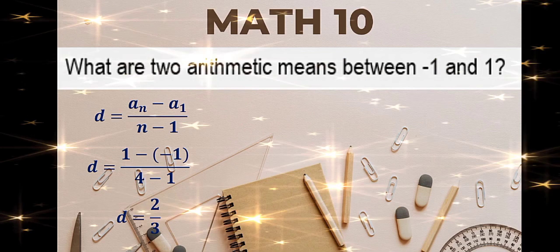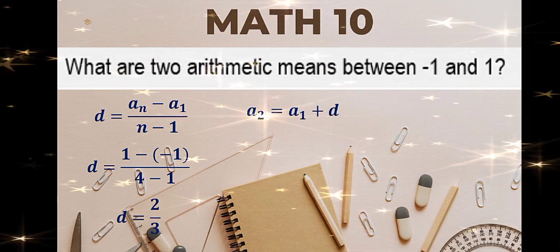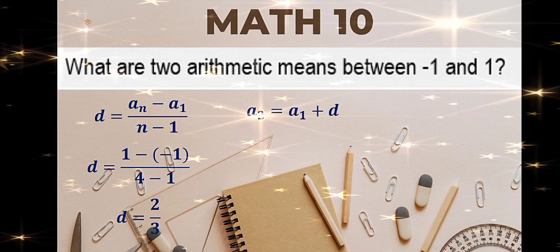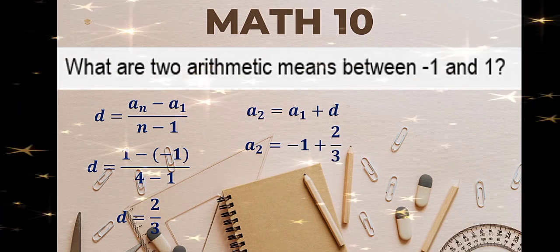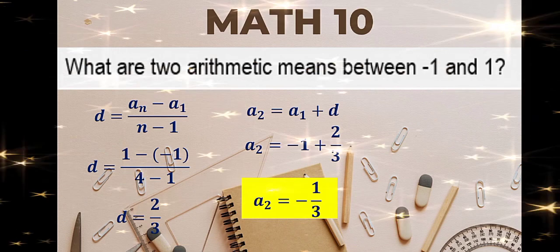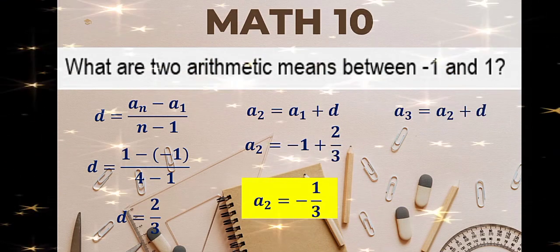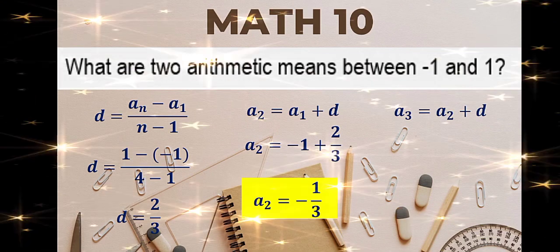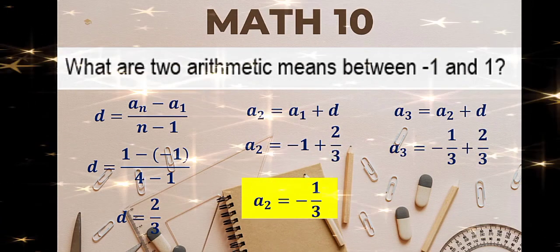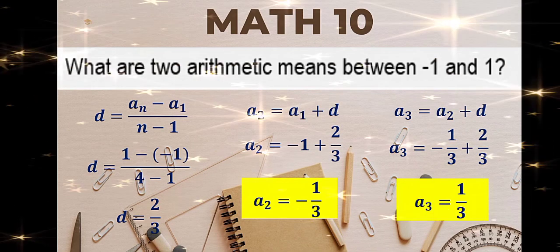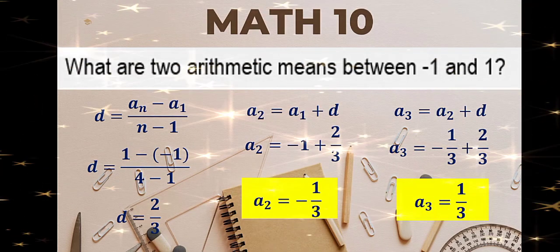To get the arithmetic means, we use a sub 2 equals a sub 1 plus d. First term is negative 1 plus the common difference of 2/3, giving us negative 1/3 — this is your first arithmetic mean. Second arithmetic mean: using your first arithmetic mean, add the common difference. That is negative 1/3 plus 2/3, or 1/3. This is your second arithmetic mean and the third term in the sequence.